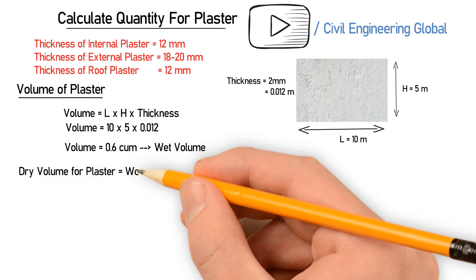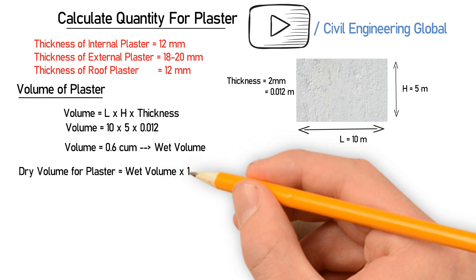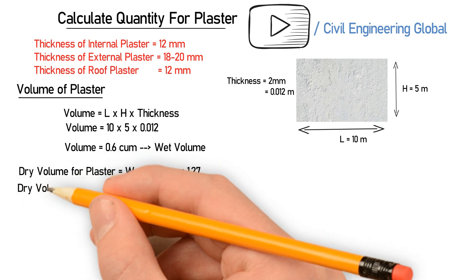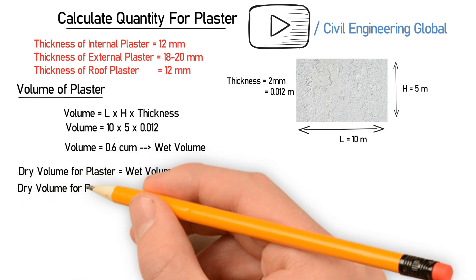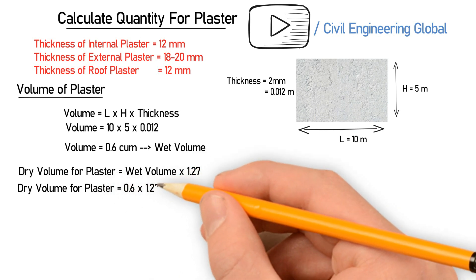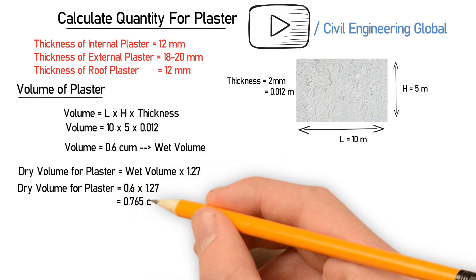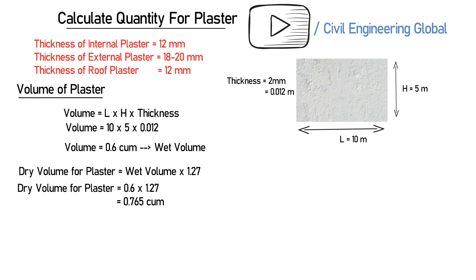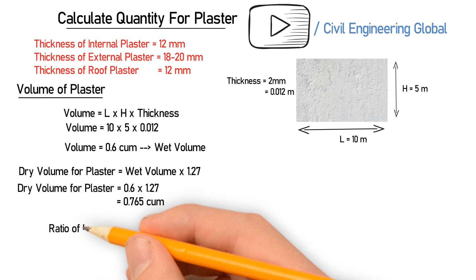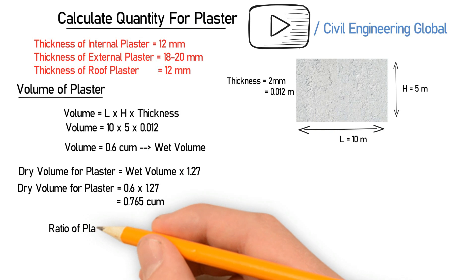The dry volume of plaster is equal to the wet volume multiplied by 1.27. The wet volume we just calculated is 0.6, so the dry volume of plaster equals 0.6 multiplied by 1.27, which gives 0.765 cubic meter. Now let's take the ratio for the plaster layer.